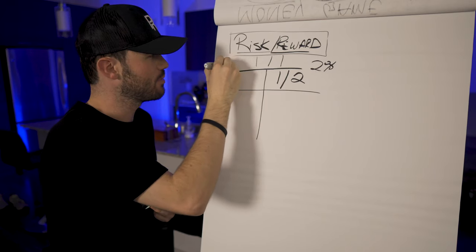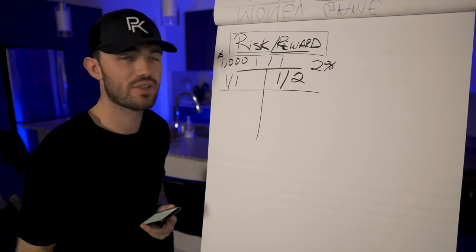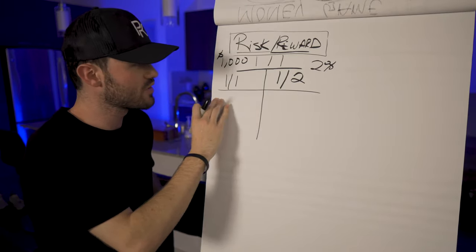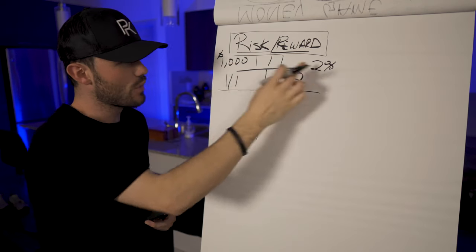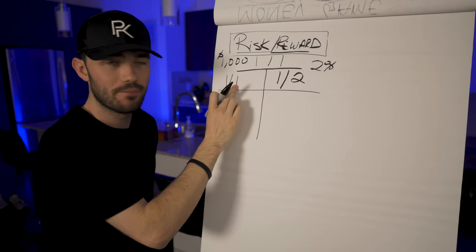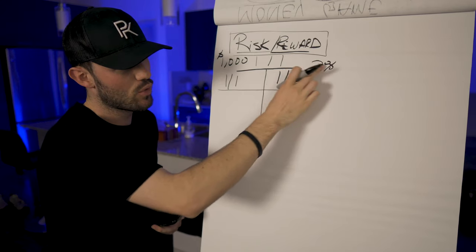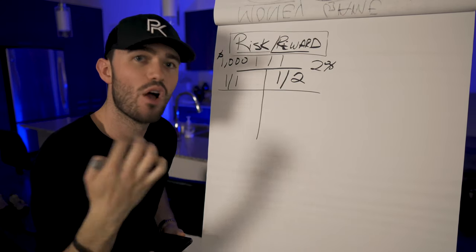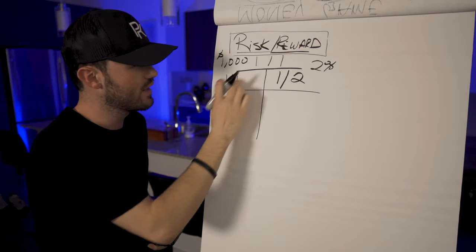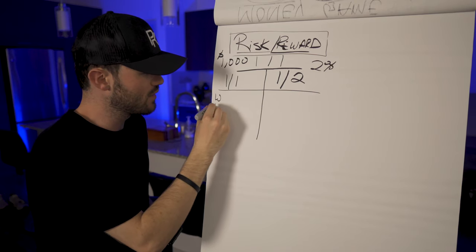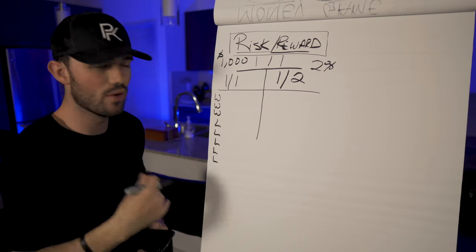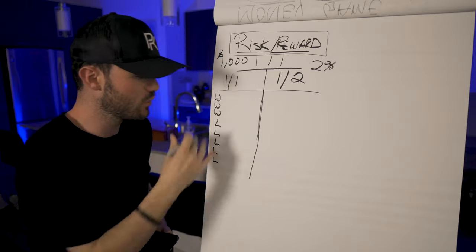We'll start with a one thousand dollar account — pretty average. Under a one-to-one risk-reward, we're risking two percent for a reward of two percent. Under a one-to-two, we're risking two percent for a reward of four percent — double the reward relative to risk. In this example, we'll place eight total trades: win three, then lose five.